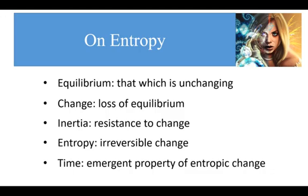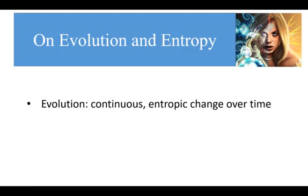So what about evolution? Evolution is continuous, irreversible change over time — or continuous, entropic change over time. This definition of evolution cannot be disputed. When we look at the evolution of the universe and the evolution of life on this planet, what do we observe? We observe continuous, irreversible change over time. Evolution cannot be undone. Nature always moves forward. It never goes back.